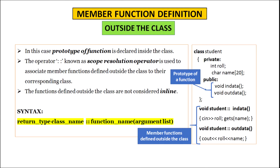When defining a member function outside the class, the function prototype is declared inside the class, and the double colon operator — also known as the scope resolution operator — is used to associate member functions with their corresponding class. The syntax is: return type, class name, double colon, function name followed by argument list. For example, in class student, the public section contains only the prototypes void in data and void out data, and after the class definition we write void student::in data followed by the function body. Similarly, void student::out data is declared.